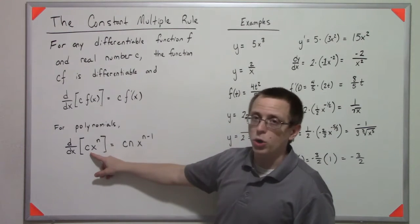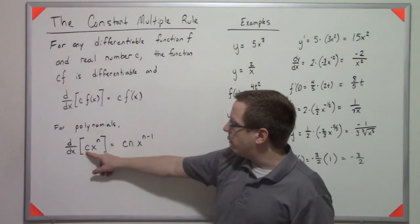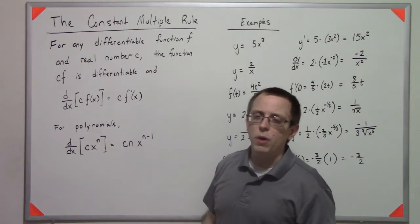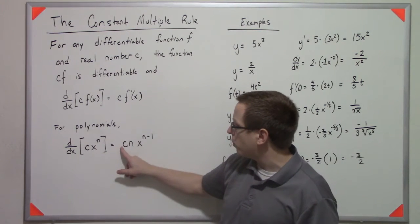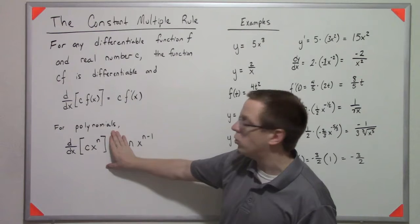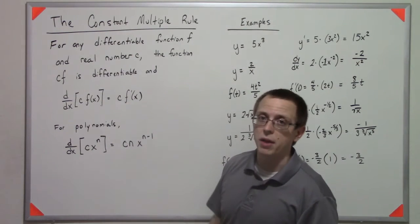Specifically if you have a polynomial and instead of x squared, you have 3x squared, then you can pull the 3 out, take the x squared derivative like normal, and then multiply 3 at the end.